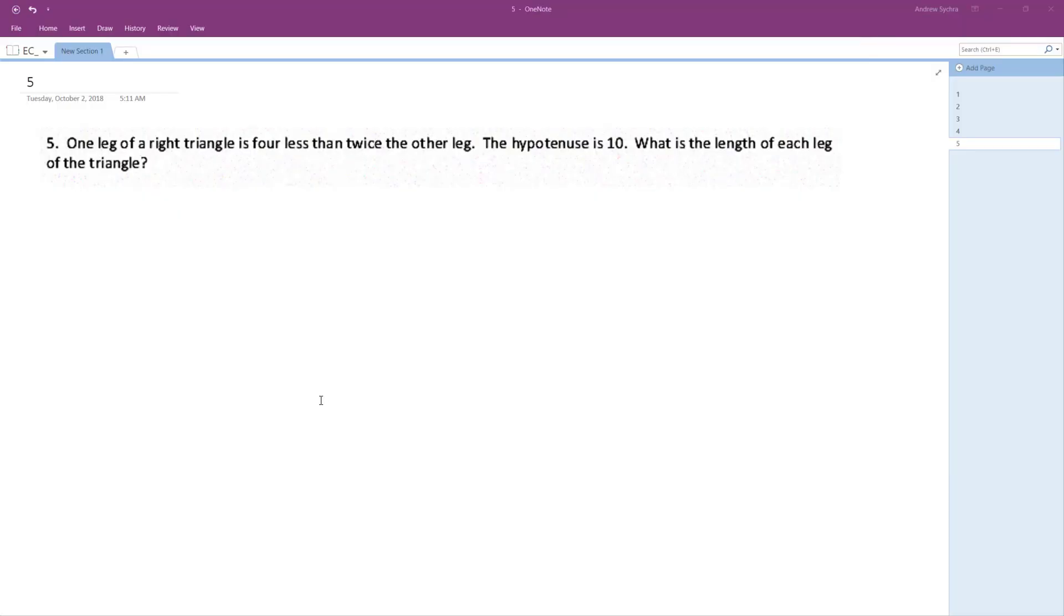One leg of a right triangle is four less than the other leg. The hypotenuse is ten. What is the length of each leg of the triangle?